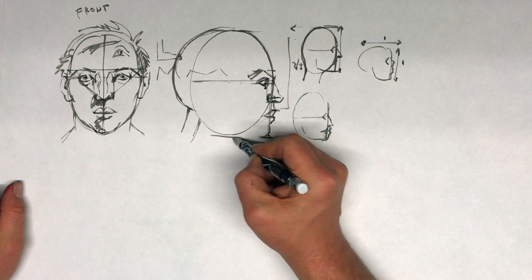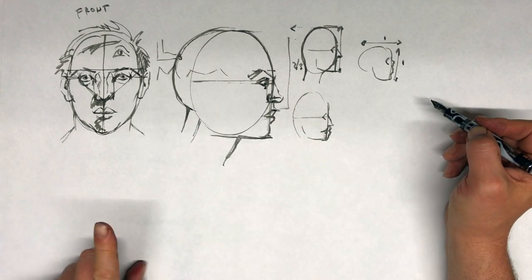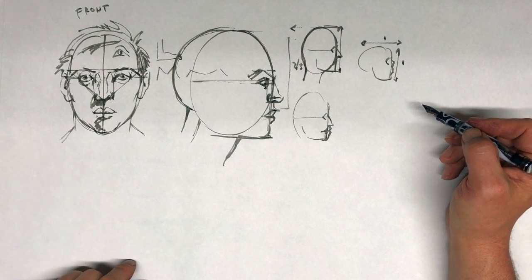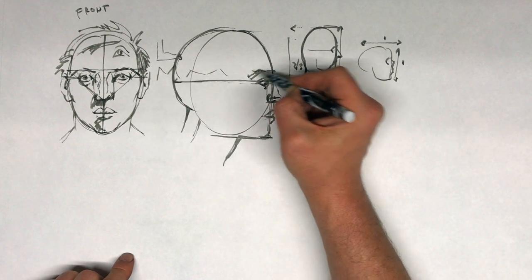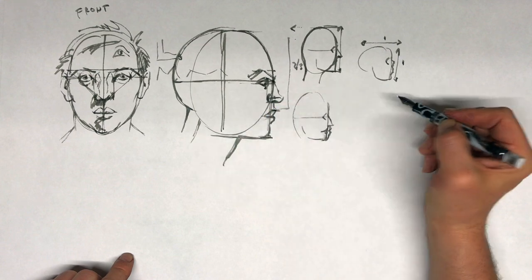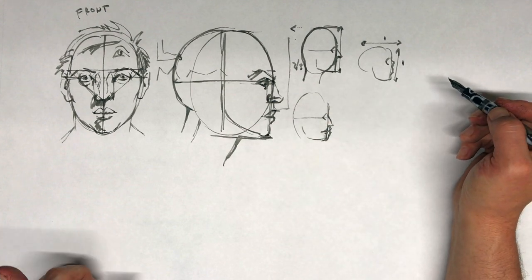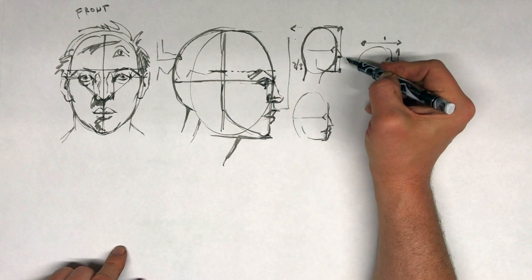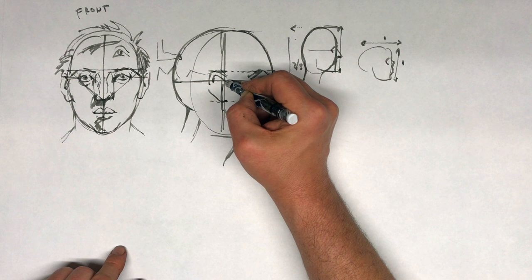Now we can indicate the neck and put in the last features when dealing with the head from the side: the jaw and the ear. The jawline is actually quite easy to find. If we take the distance of the head from one side to the other and find the middle, that'll give us a very good indication of where to place the chin. And then we know that the ear sits on the jawline, starting at the top of the brow and running to the base of the nose. Here is our ear in profile view.